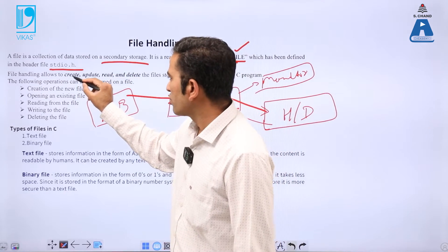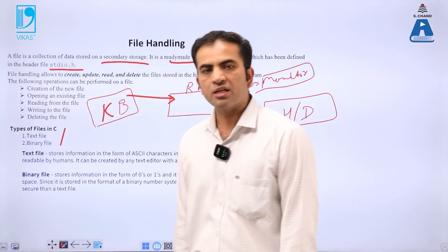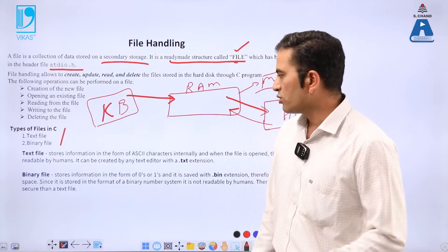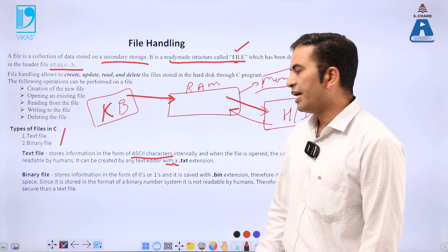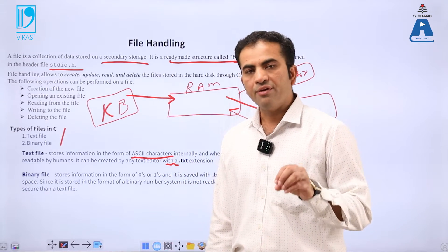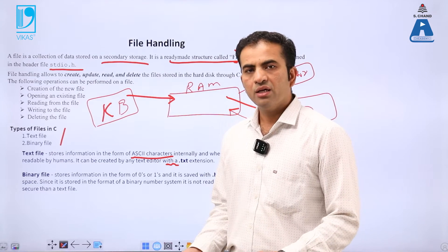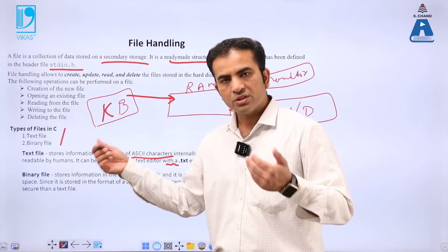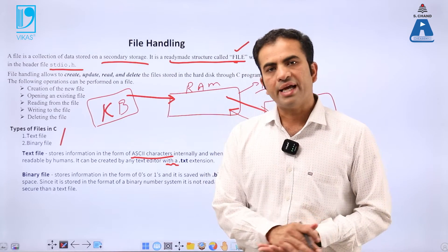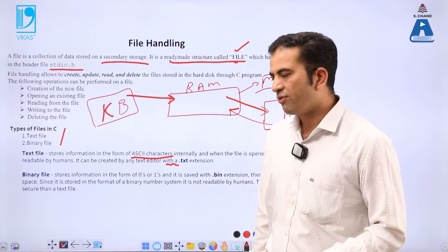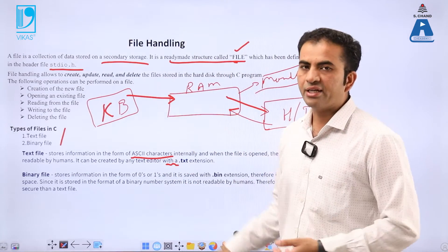File handling allows us to create, update, read, and delete files. There are two types of files: one is a text file and another is a binary file. Text files store information in ASCII characters, and binary files store information in 0s and 1s. Whatever you are writing as text, when saving in a binary file, the text converts into 0s and 1s and is saved as a binary file. We are unable to read binary files directly, but the computer can read and write them.